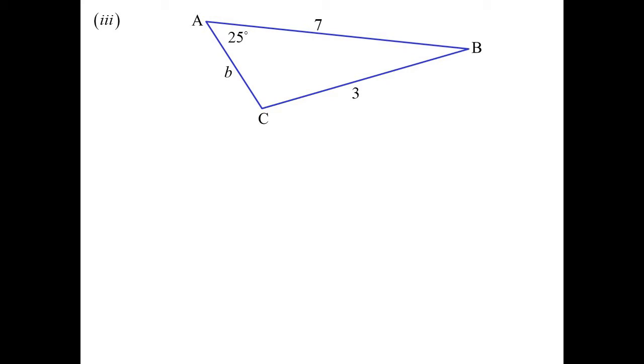You can still use the cosine rule, though. I would put it in terms of A because A is the angle that I know. So A squared is B squared plus C squared minus 2BC cos A. And I'll substitute for that. Remember, it's B that we're trying to find. Well, I've got a quadratic equation. I've got to play around with it a bit. But that actually is a quadratic equation.